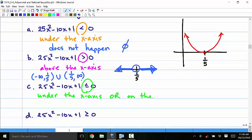Because equal to means on the x-axis. Where was it on the x-axis? At one-fifth?